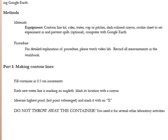Here are some basic instructions. In your container, you'll put your model in and fill the container in half-centimeter increments. Each new water line marks an isopleth, and you'll mark that location with a crayon. When you get to the top, you'll measure the highest point or the last point submerged and mark that with an X. When you're finished, make sure you do not throw away the container — you'll need it for several other laboratory activities.